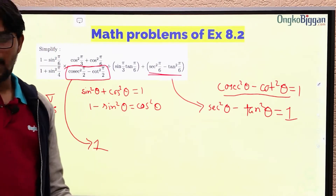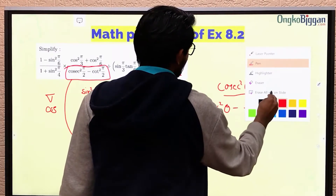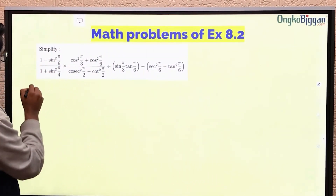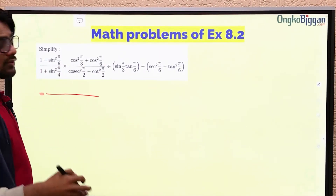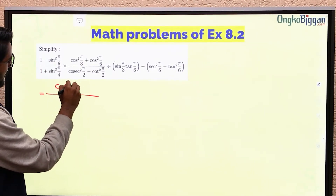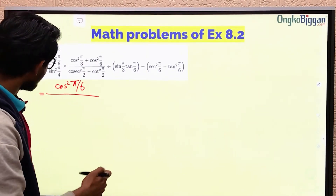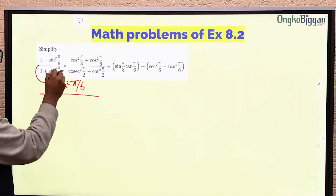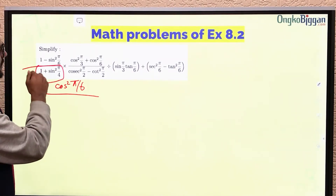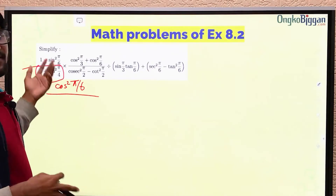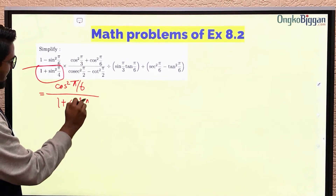Let me see where I end up. Starting from the beginning again: 1 minus sin² π/6 equals cos² π/6. On the bottom half we get 1 plus — oh, I can convert this part into cos²θ. I accidentally saw 1 minus sin² π/4, but the conversion is different. So I'll write it as 1 plus sin² π/4.